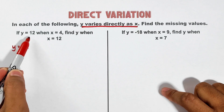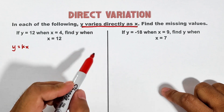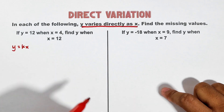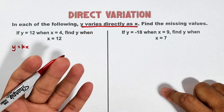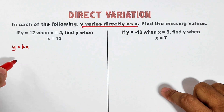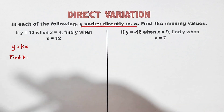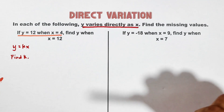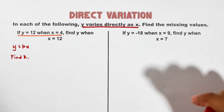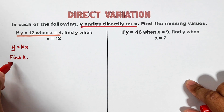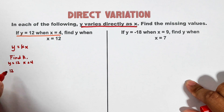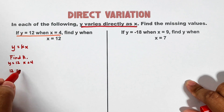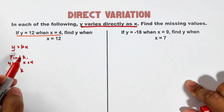For number one: if y is equal to 12 when x is equal to 4, find y when x is equal to 12. In variation problems we need to translate the phrase into an equation first — and we already have y = kx. Next, we need to find the value of k using the given values: y is equal to 12 and x is equal to 4. We substitute these values into the equation.